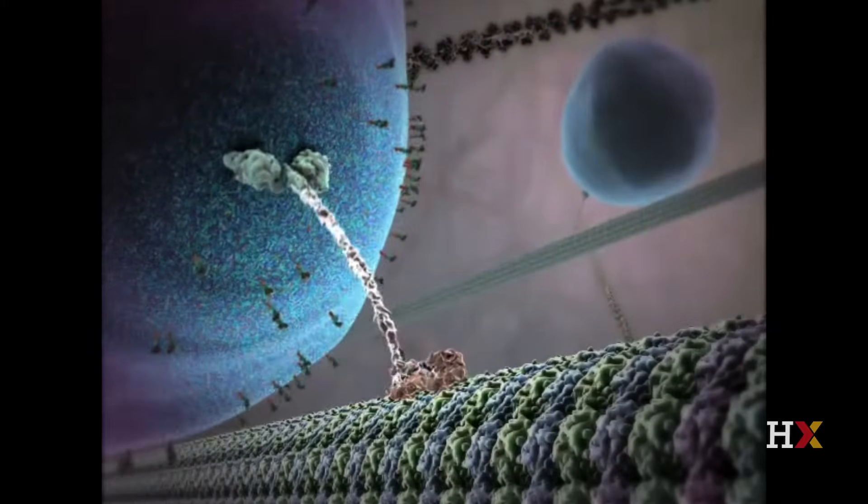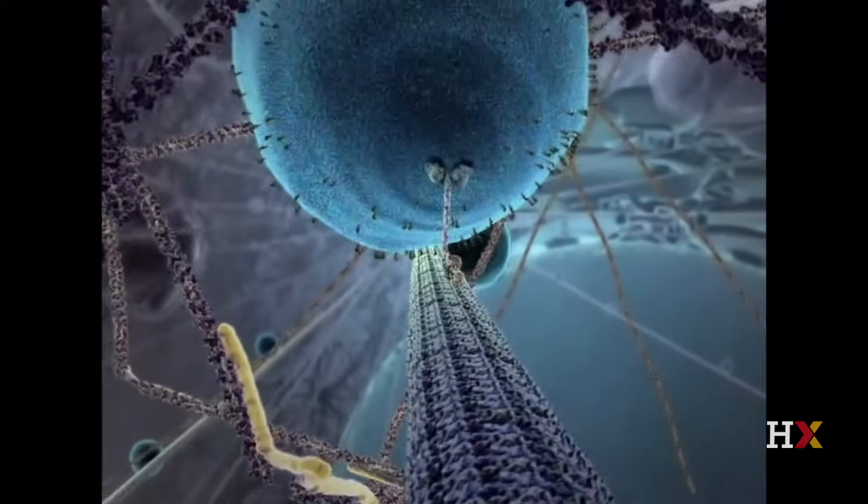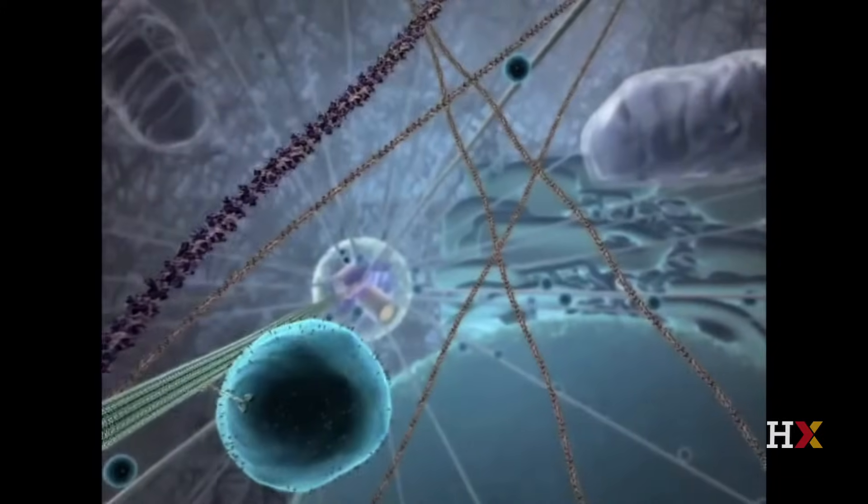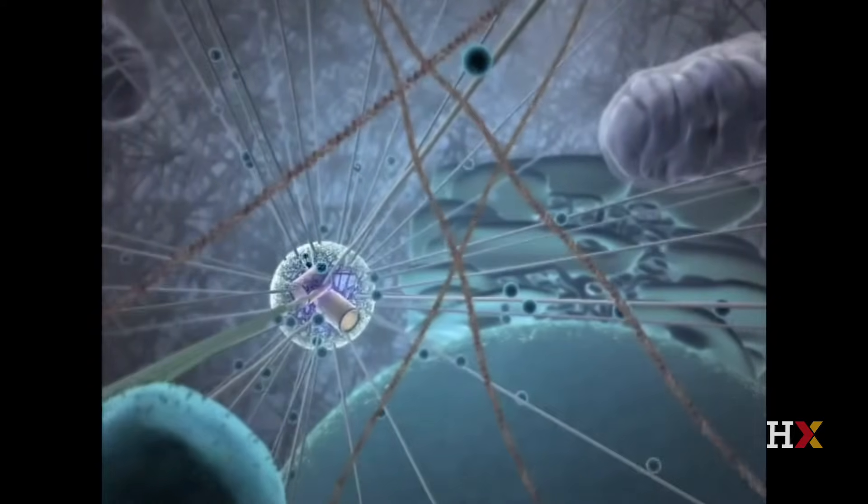These structural elements also serve as highways that motor proteins use to drag, for example, vesicles. These vesicles are full of proteins and other macromolecules that are distributed throughout the cytoplasm of the cell.